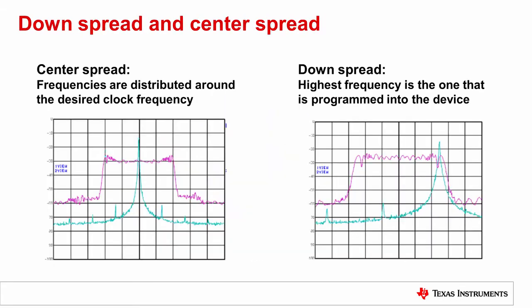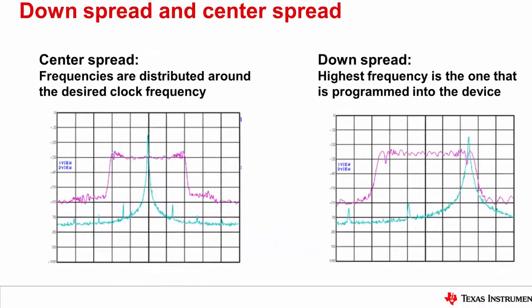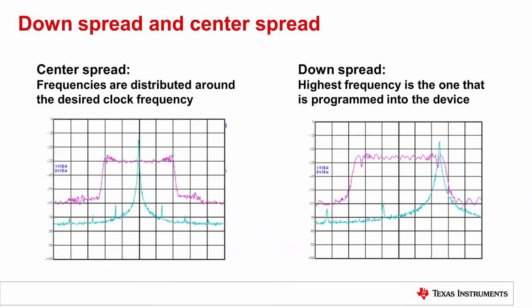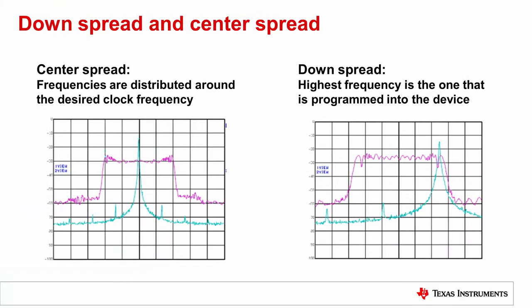Center spread SSC modulates the carrier frequency above and below the nominal frequency. Down spread SSC, however, only modulates the carrier frequency below the nominal frequency. You can see from the plot on the right, the upper edge of the SSC bandwidth coincides with the nominal frequency.